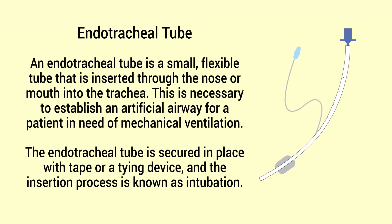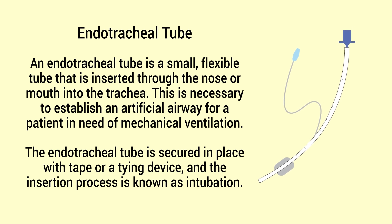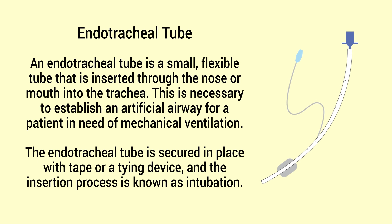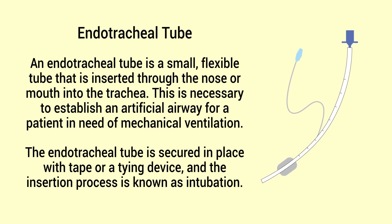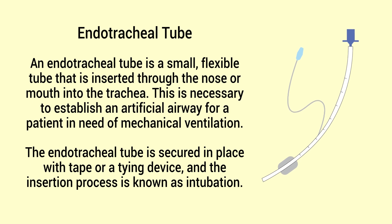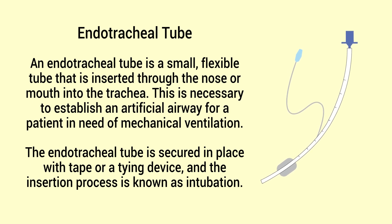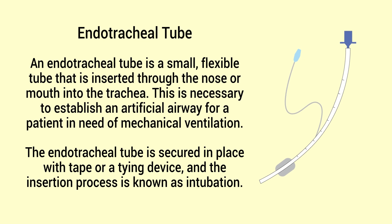An endotracheal tube is a small flexible tube that is inserted through the nose or mouth into the trachea. This is necessary to establish an artificial airway for a patient in need of mechanical ventilation. The endotracheal tube is secured in place with tape or a tying device, and the insertion process is known as intubation.